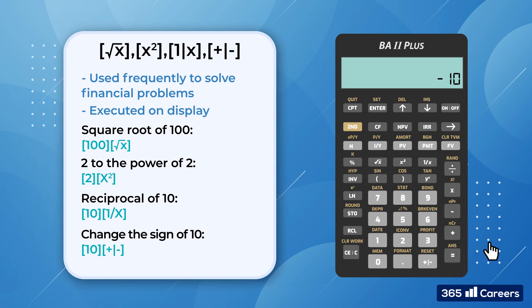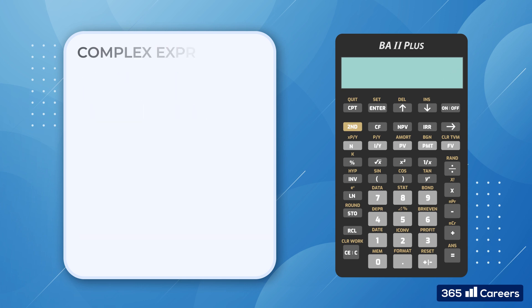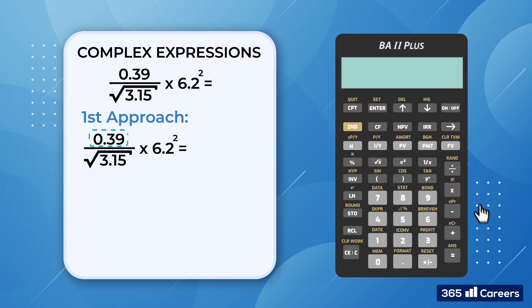Now let's combine all these functions and solve a more complex expression. We would like to divide 0.39 by the square root of 3.15 and then multiply the result by 6.2 to the power of 2. There are two ways to tackle this problem. Let's demonstrate the first one. We start from the numerator of the expression and enter 0.39 divided by 3.15. Here is the tricky part, so pay attention. Before we divide, we take the square root of the denominator.